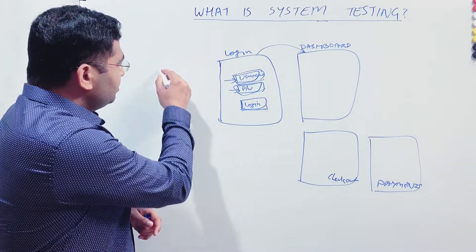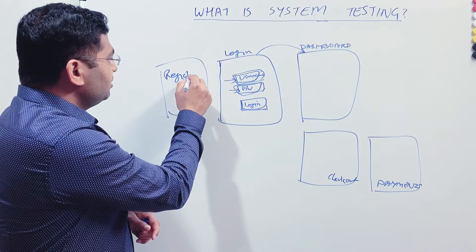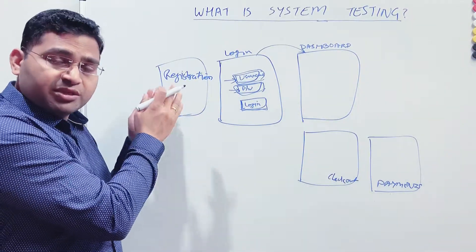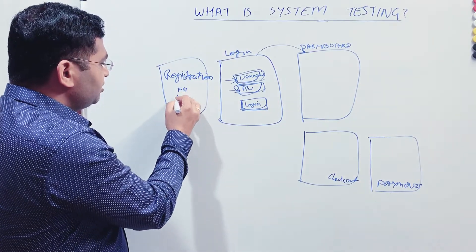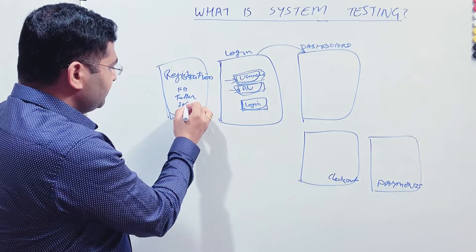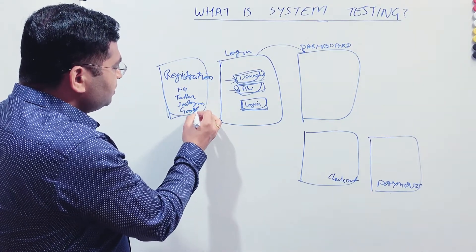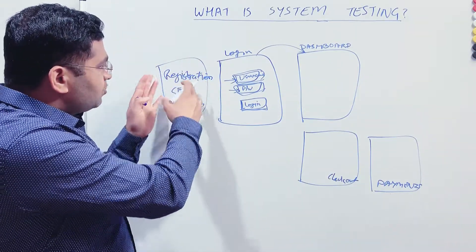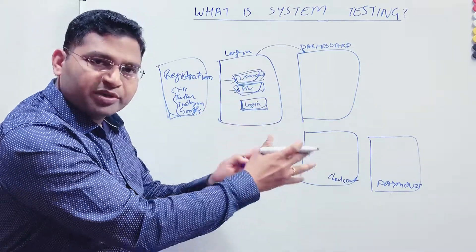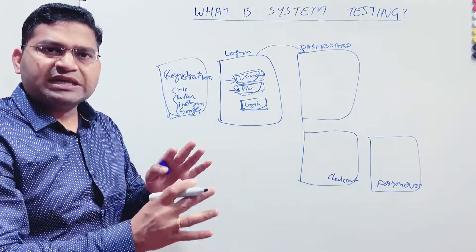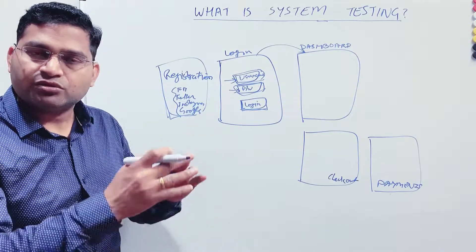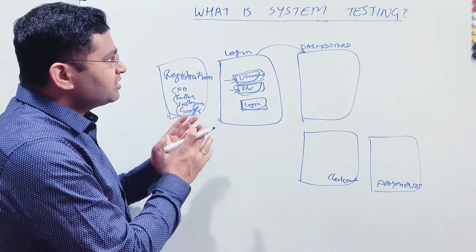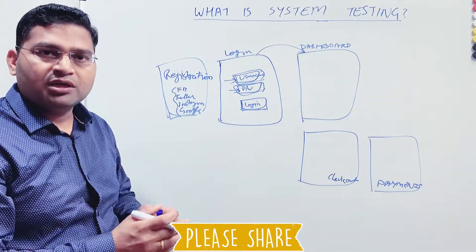Login functionality is one module, and prior to that there is a registration module as well. When we say register, the user can register using their email or through social media accounts such as Facebook, Twitter, Instagram, or Google. So registration is one module, login is another module, then there's dashboard, checkout, payments, add card, remove card — there are so many modules or features in the overall e-commerce application. Once all these modules are integrated together and working fine and you test that integrated system as a whole, that is system testing.